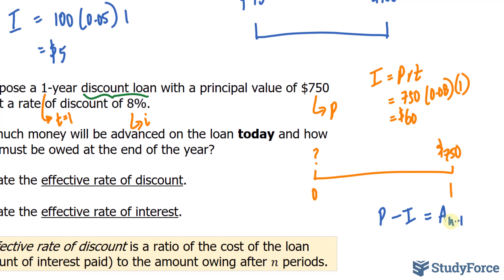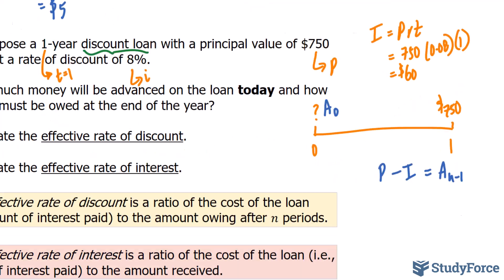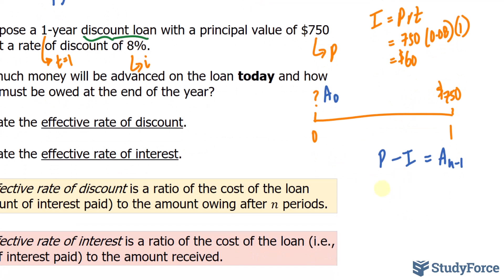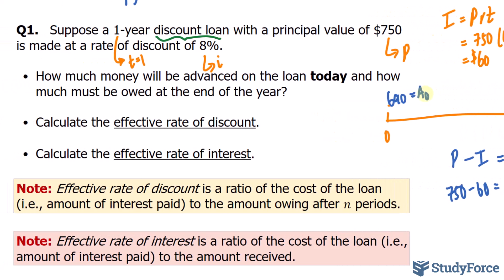A sub N take away 1 means the amount that you will receive today. N represents the number of periods. In our case, it's a 1. So this will be A sub 0. So, subtracting 60 away from 750 gives us 690. So that is how much you will receive at the very beginning. That answers the first part.